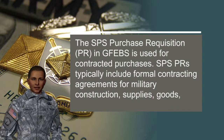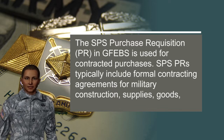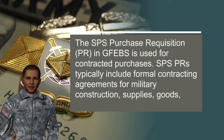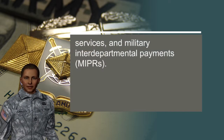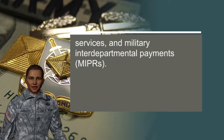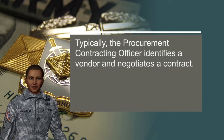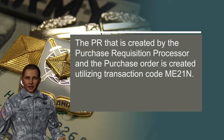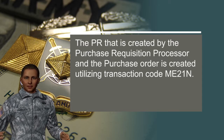The SPS Purchase Requisition in GFIBS is used for contracted purchases. SPS PRs typically include formal contracting agreements for military construction, supplies, goods, services, and military interdepartmental payments. Typically, the procurement contracting officer identifies a vendor and negotiates a contract. The PR is created by the Purchase Requisition Processor, and the Purchase Order is created utilizing transaction code ME21N.